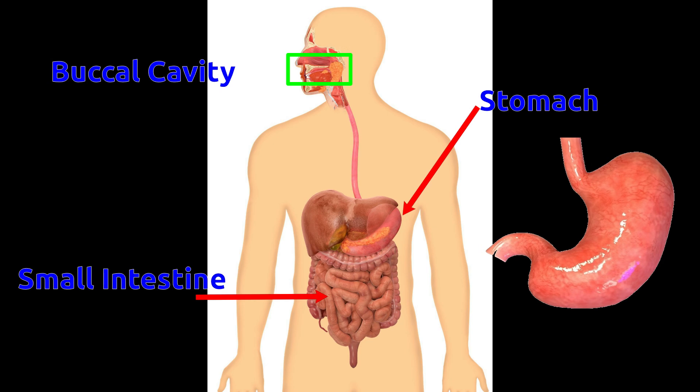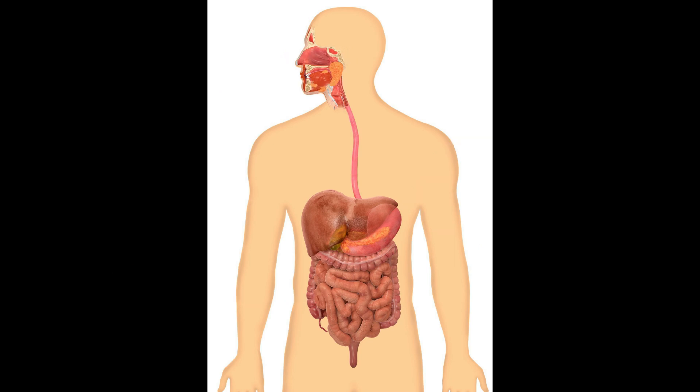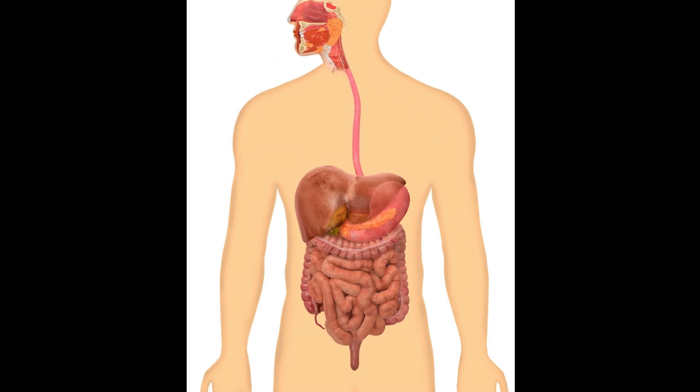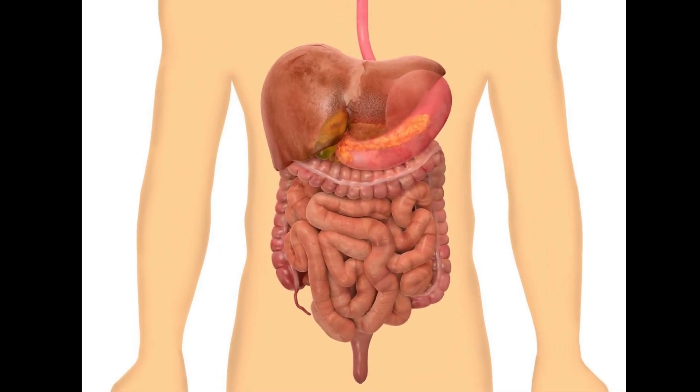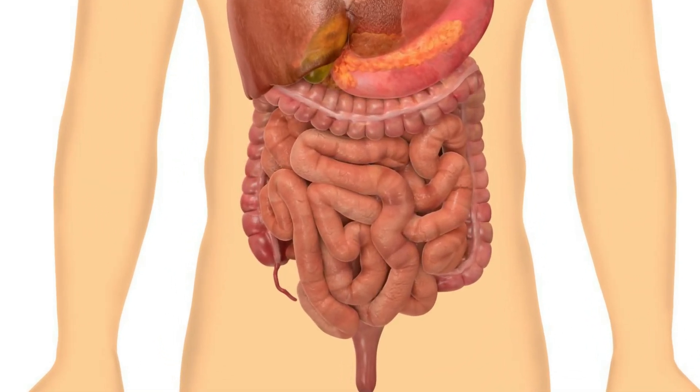After digestion, nutrients in the food are available in simple form and can be absorbed. Most of the nutrient absorption takes place in the small intestine.